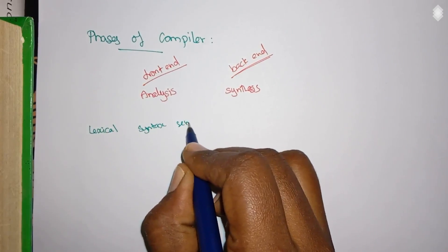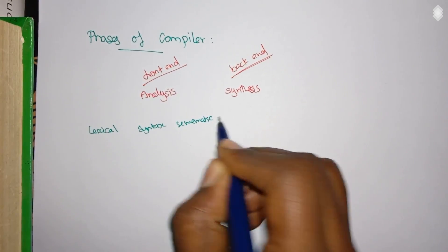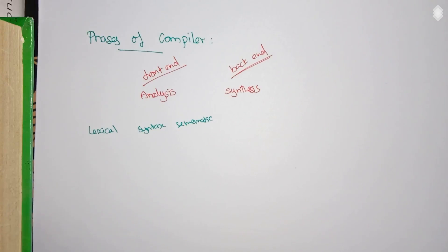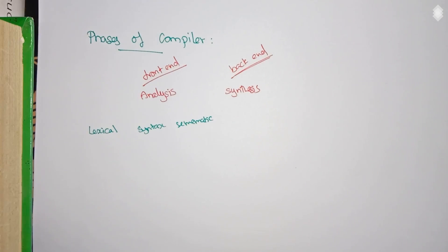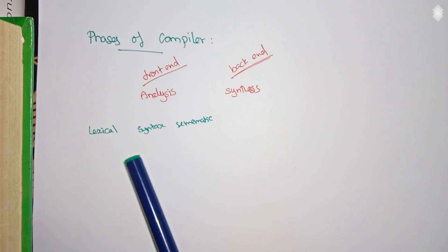The lexical analyzer takes the entire source program and converts it into a set of meaningful tokens, analyzing the program lexeme by lexeme. The syntax analyzer then checks the syntactic structure of the code — since each programming language has its own syntactic structure, it verifies whether the code is syntactically correct and generates a parse tree.